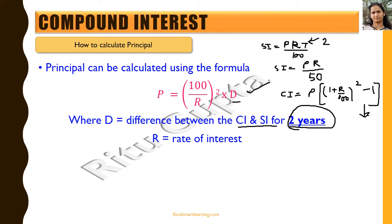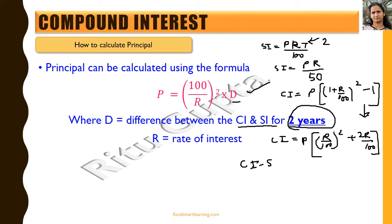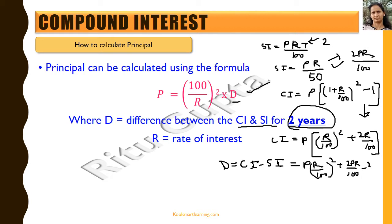Now the compound interest for the same is given by P into 1 plus r by 100 whole square minus 1. If we simplify this, we get compound interest equal to P into r by 100 whole square plus 2r by 100. Now if we take the difference of compound interest and simple interest, this will be equal to P into r by 100 whole square plus 2PR by 100 minus 2PR by 100, so these cancel out.